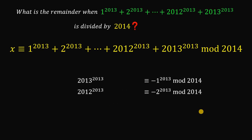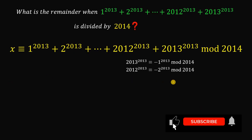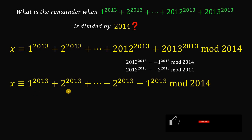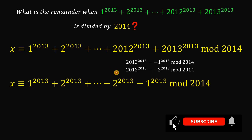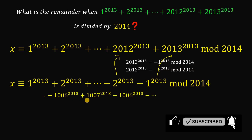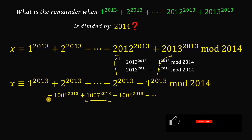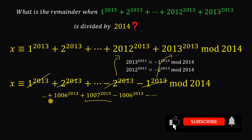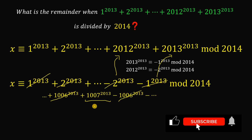Using this concept we can rewrite our equation as: x is congruent to 1^2013 + 2^2013 + ... + (−2)^2013 + (−1)^2013 (mod 2014). In the middle we have 1007^2013. Notice that 2^2013 and (−2)^2013 cancel to 0, and (+1006)^2013 and (−1006)^2013 cancel to 0, as you can see. So what's left is 1007 raised to the power of 2013 mod 2014.